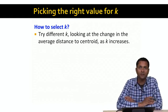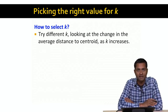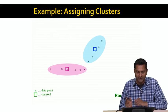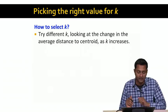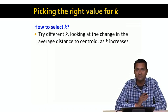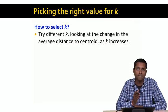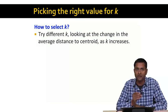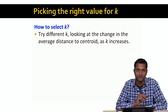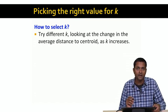An important question is: how do we pick the right value of k? In the previous example, we arbitrarily picked k equal to two, and that actually turned out to be the right value for that data set because there are roughly two different clusters of data points. But in general, how do we know the right value of k up front? Since we don't know the right value, the obvious answer is to try different values of k and see what looks good. One obvious answer is to look at the average distance of points from the centroid as k increases.